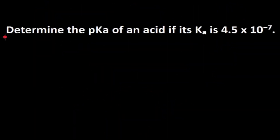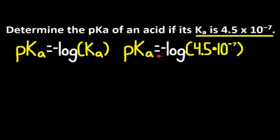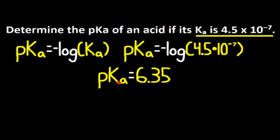Let's do this practice problem. Determine the pKa of an acid if its Ka is 4.5 times 10 to the negative 7. Remember that pKa is equal to the negative log of Ka. So pKa is equal to the negative log of 4.5 times 10 to the negative 7. Do this in your calculator and you get pKa is equal to 6.35. We have two sig digs from 4.5, and sig digs only apply to the decimal numbers for pKa or pKb, which is why we have two decimal places — a similar rule that applies to pH and pOH.